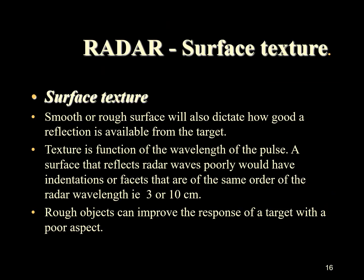Surface texture: whether a surface is rough or smooth will dictate how good a reflection is available from a target. The texture is a function of the wavelength of the pulse. A surface which reflects radar waves poorly would have indentations or facets of the same order as the radar wavelength, that is 3 to 10 cm. It should be noted that objects which appear rough to radar waves can improve the response of a target with a poor aspect.